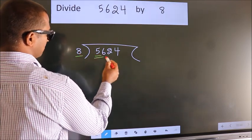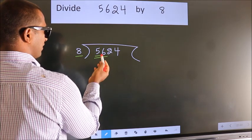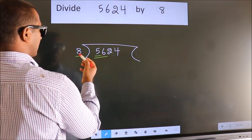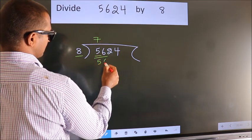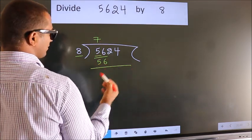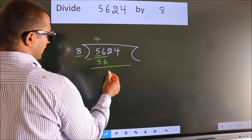So we should take 2 numbers: 56. When do we get 56 in the 8 table? 8 times 7 is 56. Now we should subtract. We get 0.